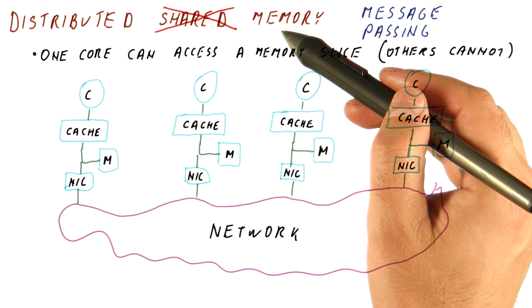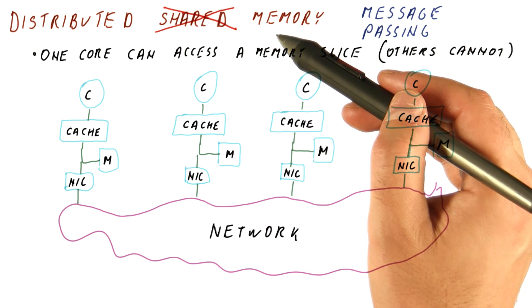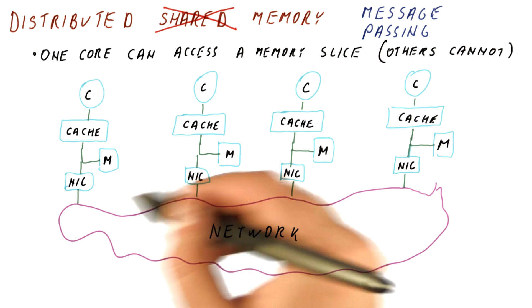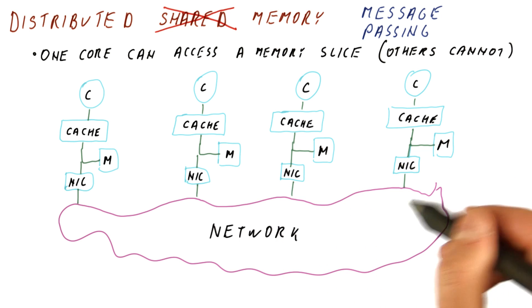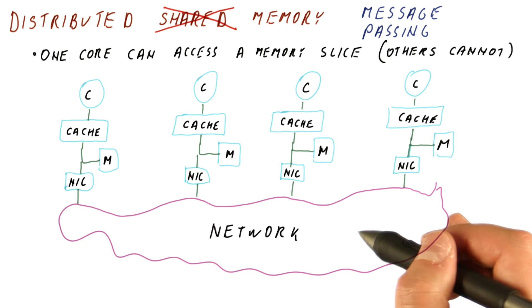If you have a distributed memory supercomputer, for example, it's just that this network and these network cards are a lot faster than your normal ethernet connection.